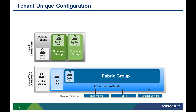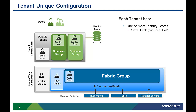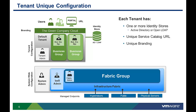Each tenant has unique configuration policies that are specific to that tenant. Each tenant has one or more identity stores used to authenticate users. These identity stores can be Active Directory or any open LDAP directory service. The management portal can have its own URL, and that portal can have unique branding specific to that tenant. Each tenant can also have their specific email servers. Now let's demonstrate how to modify those configuration attributes.